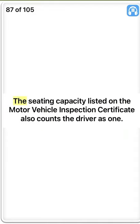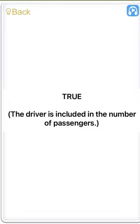The seating capacity listed on the motor vehicle inspection certificate also counts the driver as one. True. The driver is included in the number of passengers.